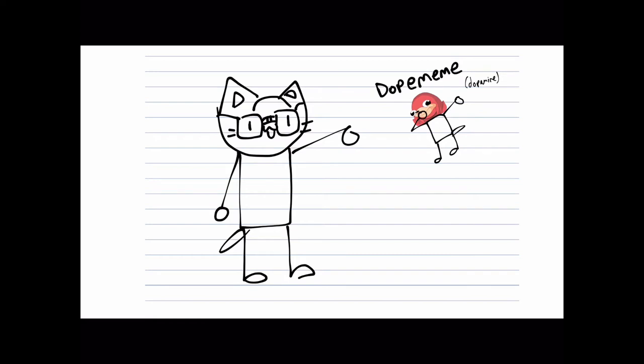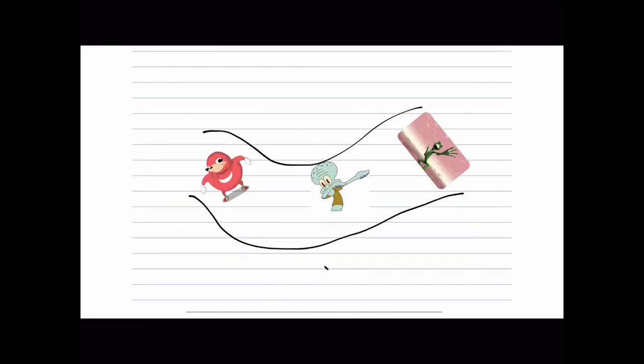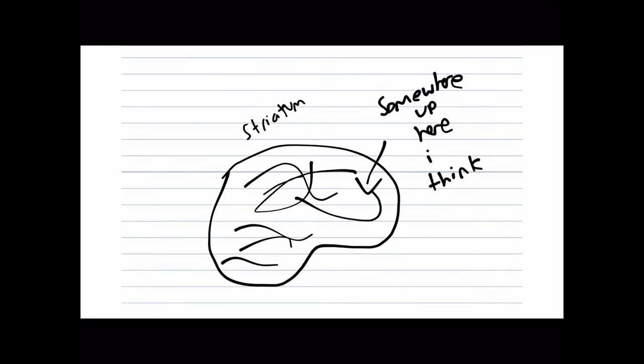Alright, in order to understand why this happens, we need to comprehend dopamine. Dopamine comes into play when listening to a song we love, playing a game we like, or eating food that tastes really good. Dopamine flows through our brain, goes into our striatum, and floods it.